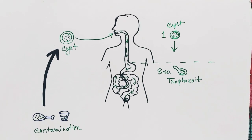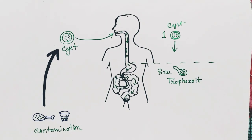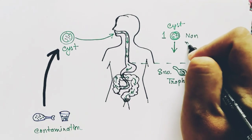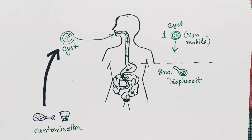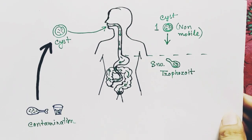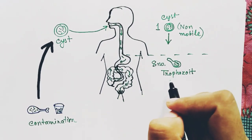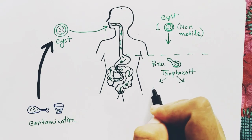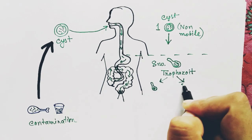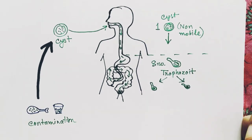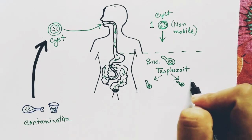When the trophozoite reaches the intestine, it starts multiplying. It multiplies in our colon by binary fission, forming lots of trophozoites in the colon.